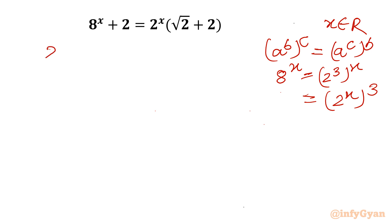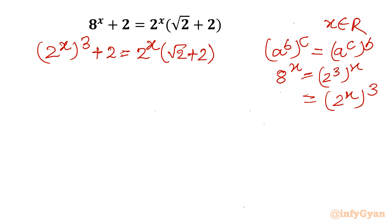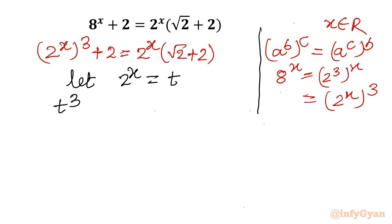So the equation becomes (2^x)³ + 2 = 2^x · √2 + 2. Now it is substitution time — as you can see, 2^x appears throughout. So I will let 2^x = t. Applying this, the equation becomes t³ + 2 = t · √2 + 2.